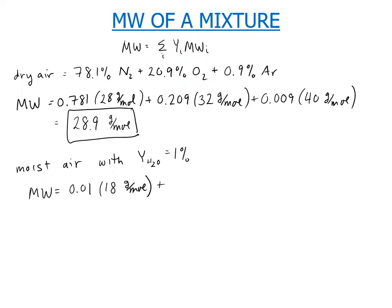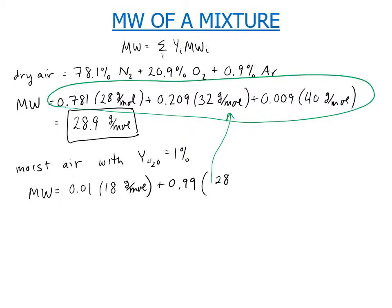And now we still have everything else, but they're reduced by 1%. So there's only 99% of the other stuff instead of 100% of it. So we have 0.99 times all of these terms that we had above, which turned out to be 28.9 grams per mole. And this is equal to 28.8 grams per mole.